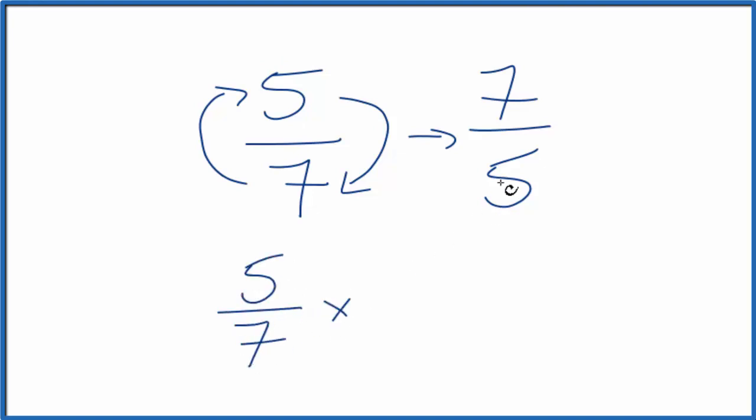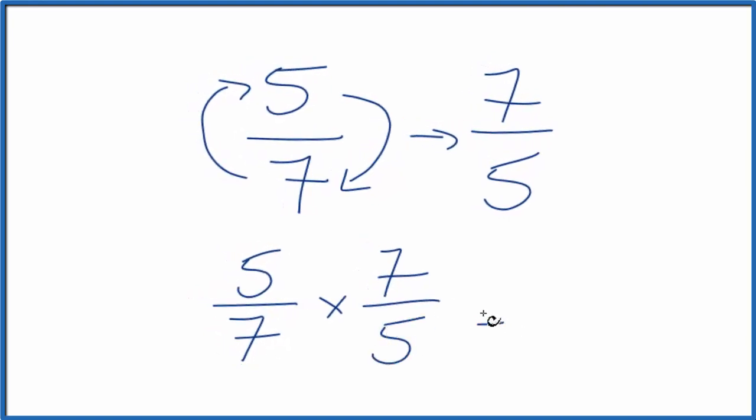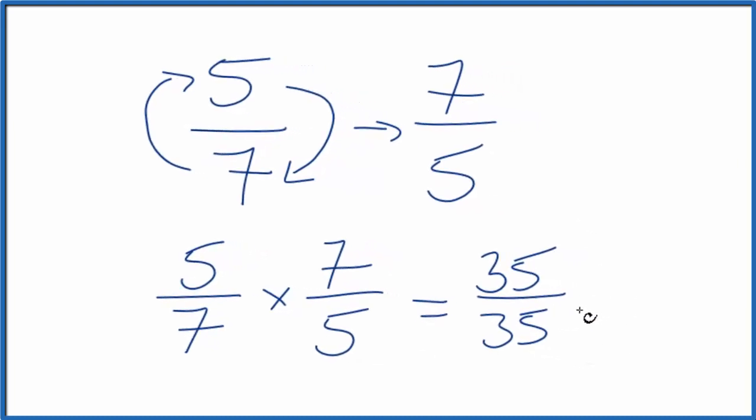And then we multiply that by the reciprocal, seven-fifths. And we should end up with one as our answer. Five times seven, that's 35. And seven times five, that's 35. So 35 divided by 35 equals one. So we did the first part correctly here.